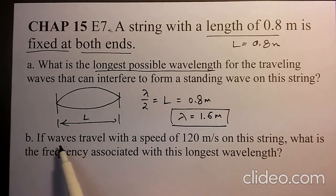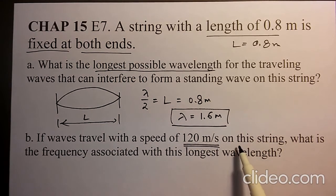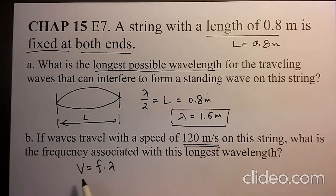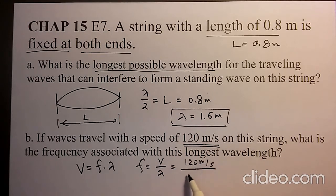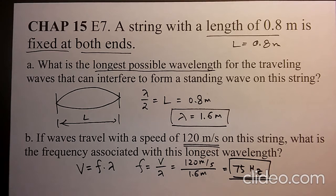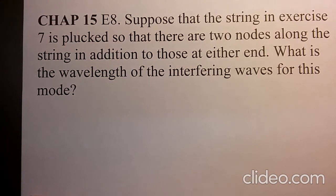So half lambda equals L, and L equals 0.8 meters, so your lambda is 1.6 meters. If waves travel with a speed of 120 meters per second on this string, what is the frequency associated with this longest wavelength? F equals V over lambda, which is 120 meters per second divided by 1.6 meters, giving you 75 hertz as your frequency for this wave.